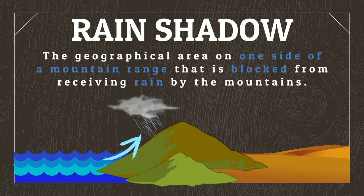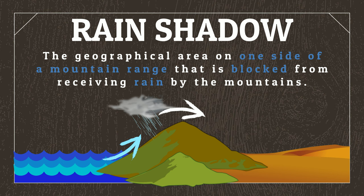When this wind-carried moisture encounters a mountain, it deposits most, if not all, of its moisture on the side of the mountain it approaches from. By the time the wind has lifted over the mountain, it's lost its moisture to precipitation on the shoreward side, and so continues onward as dry wind.